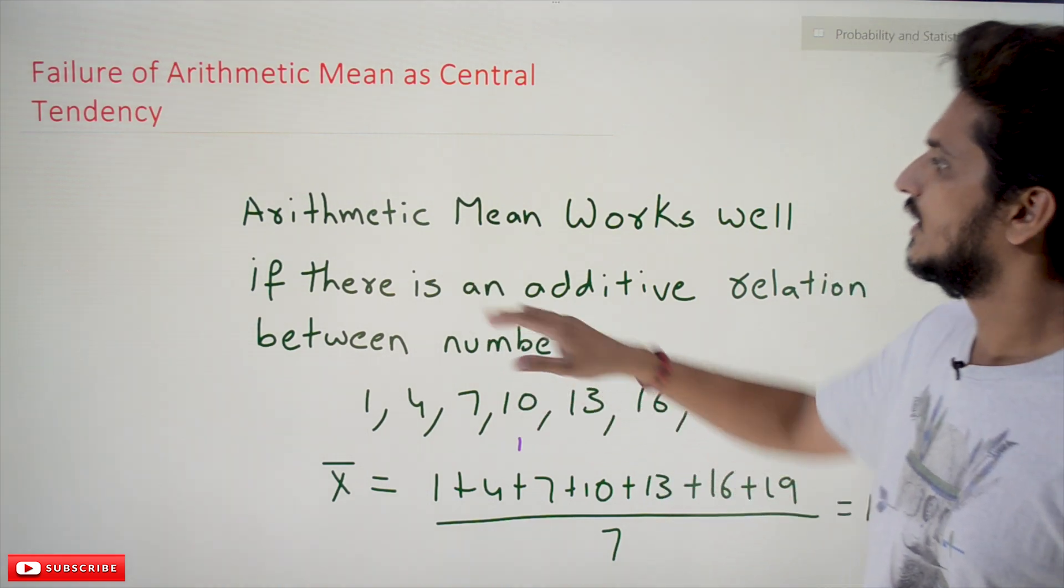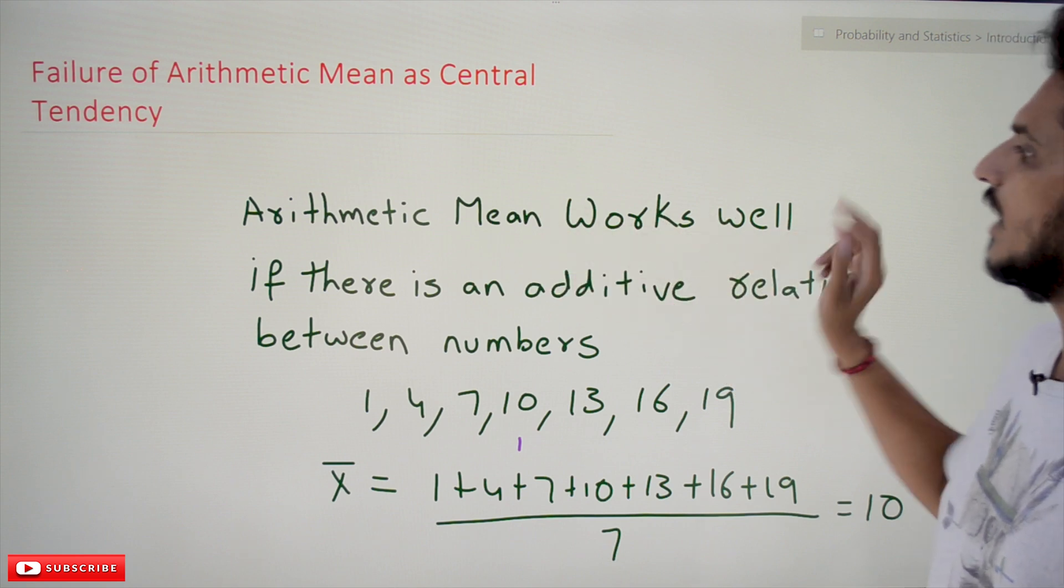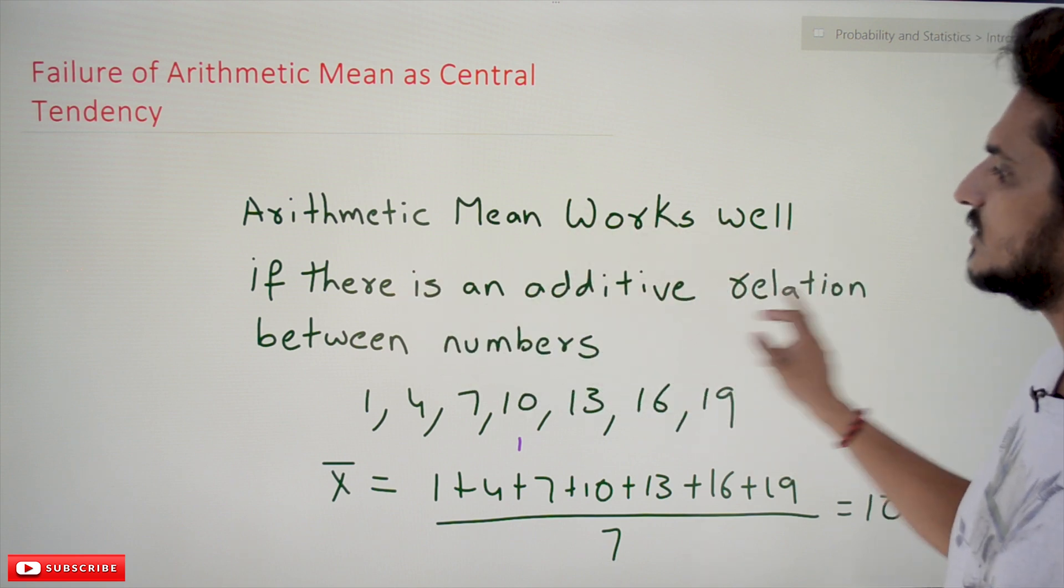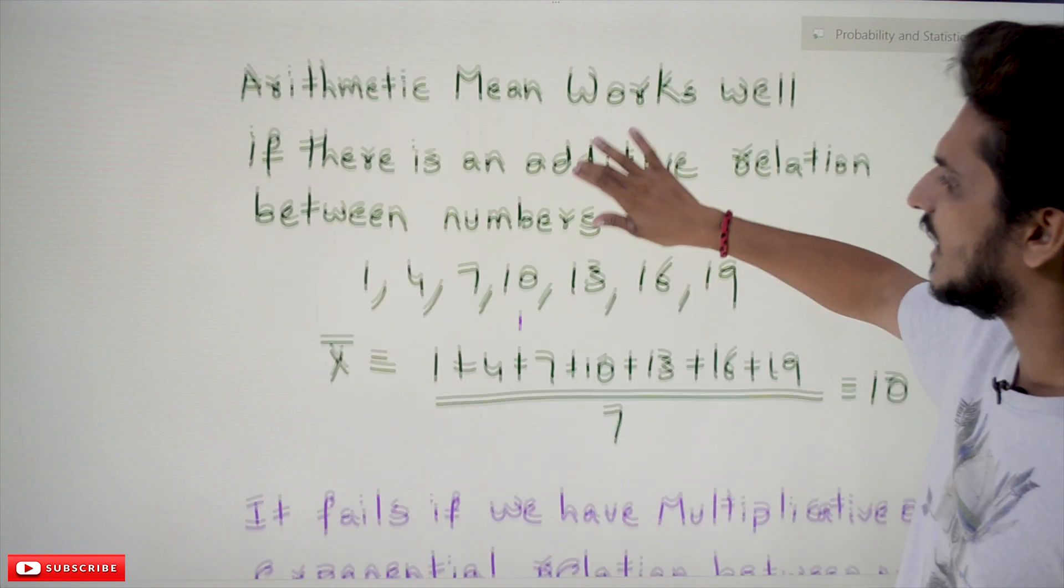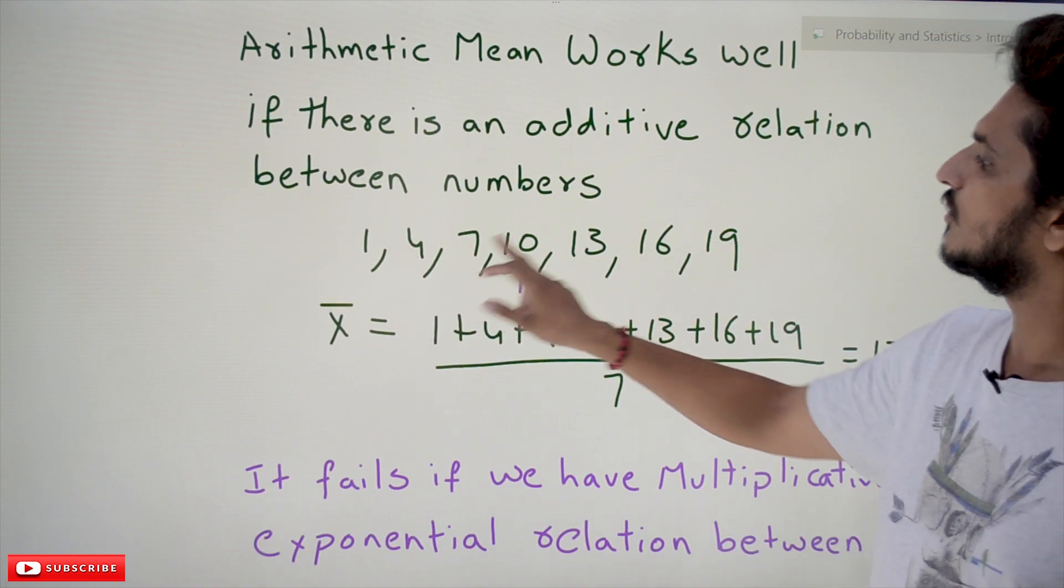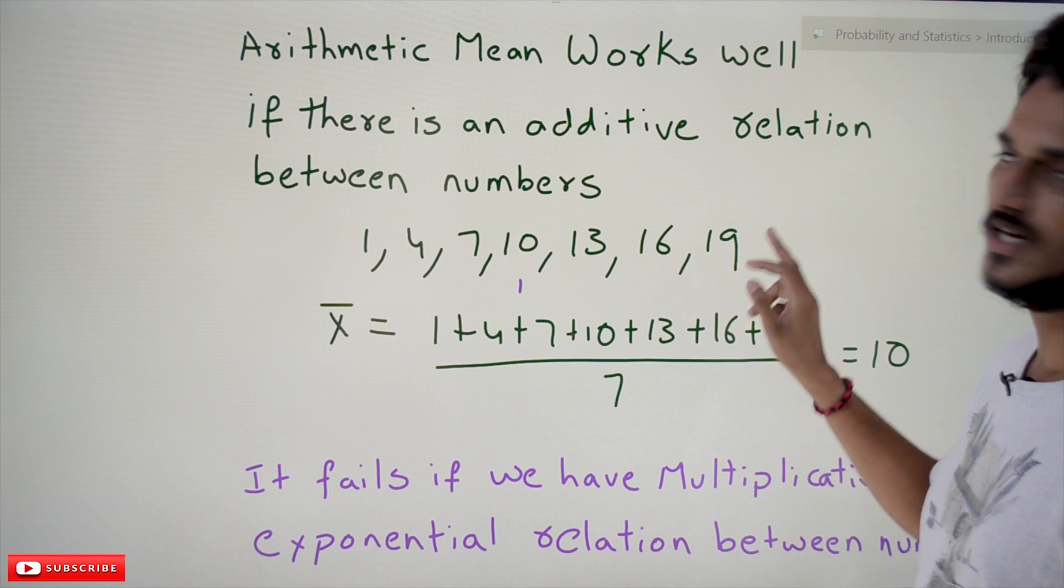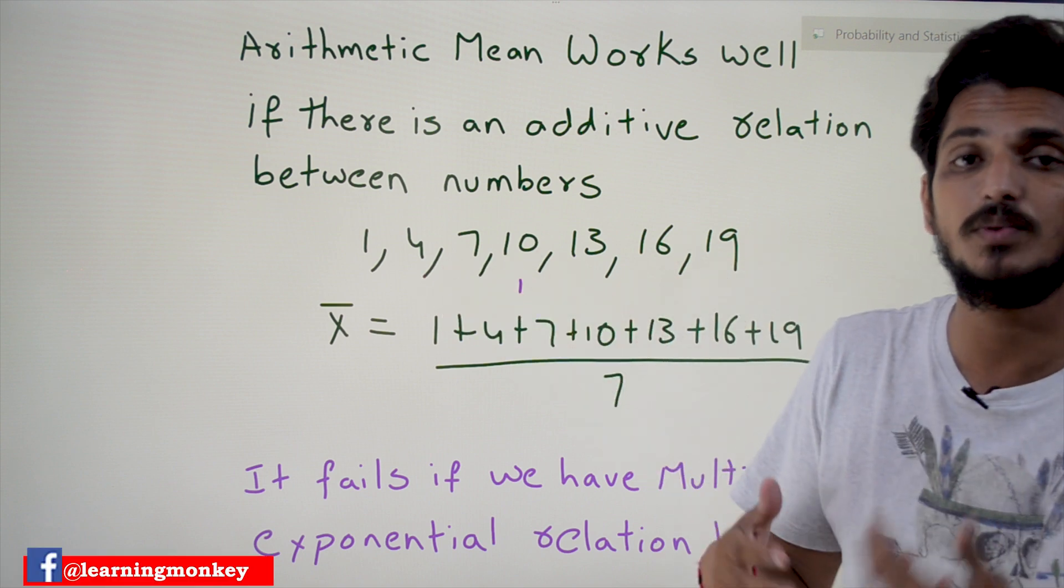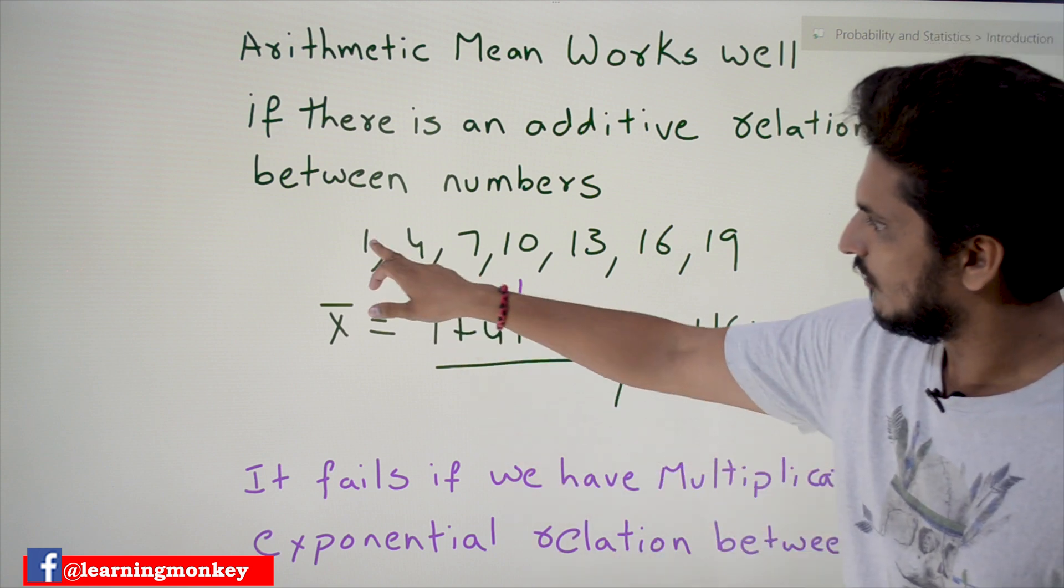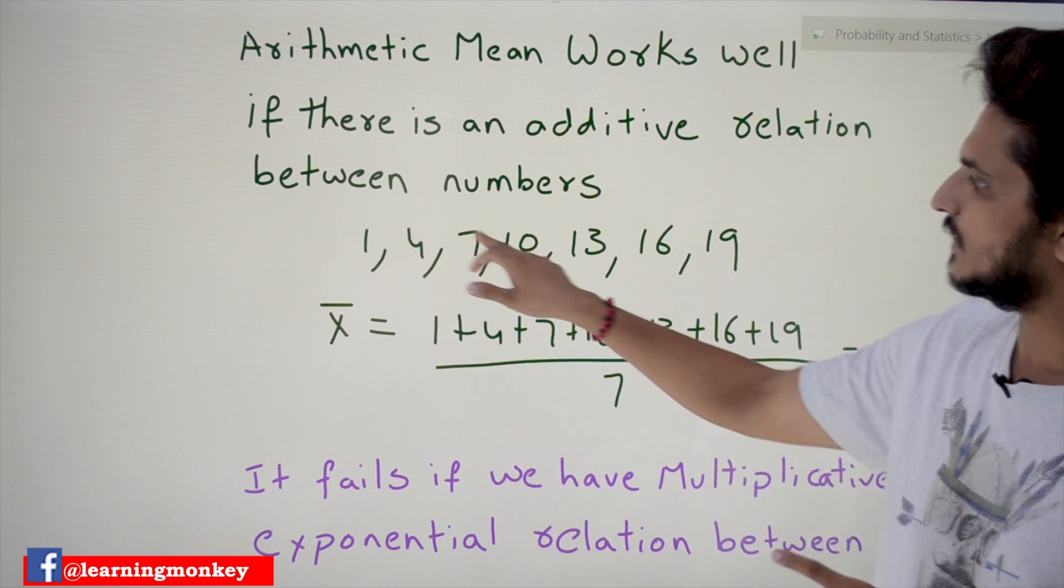Arithmetic mean works well if there is an additive relationship between numbers. With an example we'll have better understanding. Let's take an example: 1, 4, 7, 10, 13, 16, 19. If you take these numbers, we are having an additive relationship between these numbers—1 plus 3 is 4, 4 plus 3 is 7, 7 plus 3...